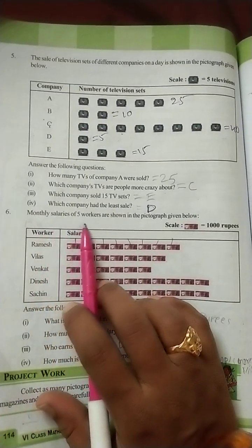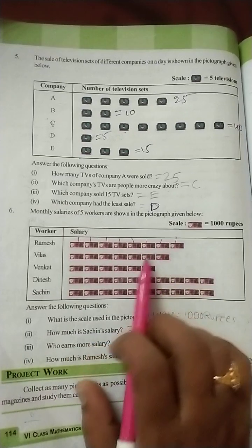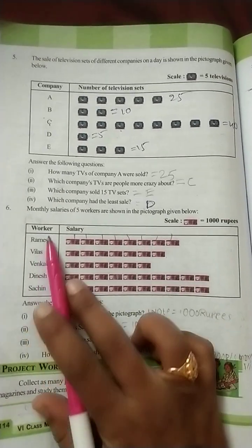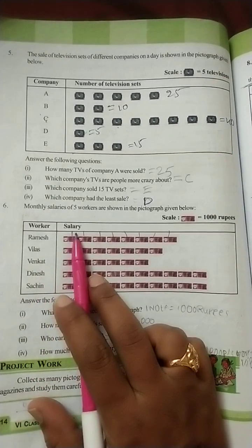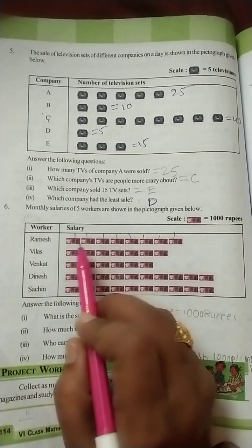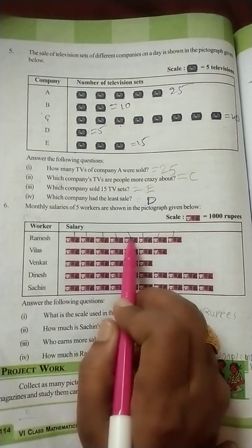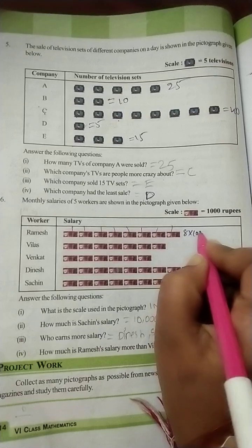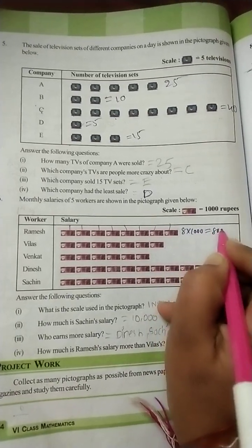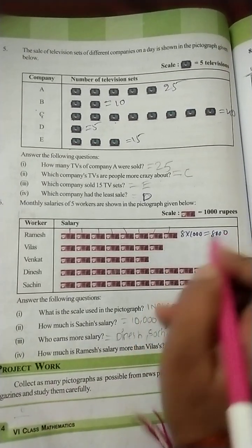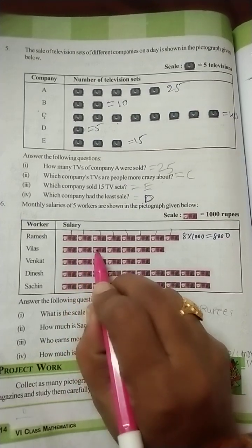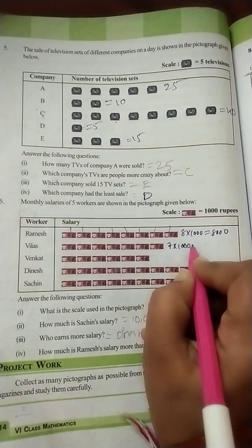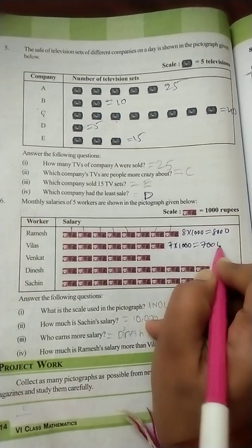Monthly salaries of 5 workers are shown in the pictograph given below. Here one note indicates 1000 rupees. Worker's name and salary. Ramesh, how many? 1, 2, 3, 4, 5, 6, 7, 8. So 8 into 1000, 8000 rupees. Next, 1, 2, 3, 4, 5, 6, 7. Seven into 1000, 7000.